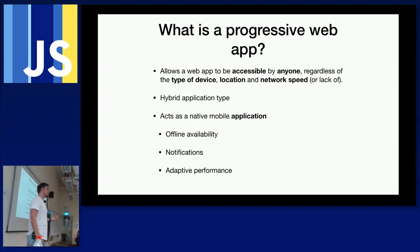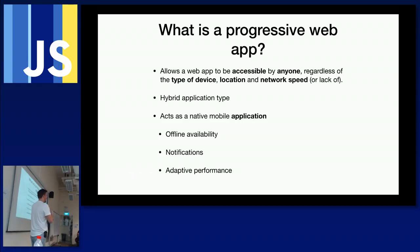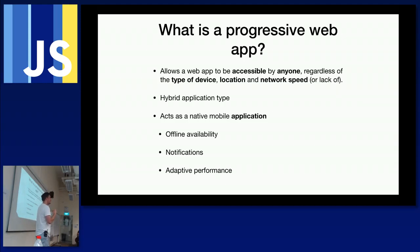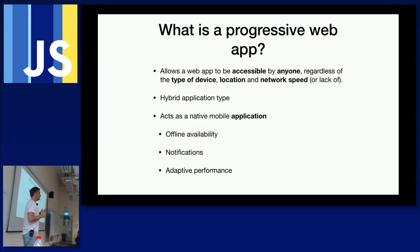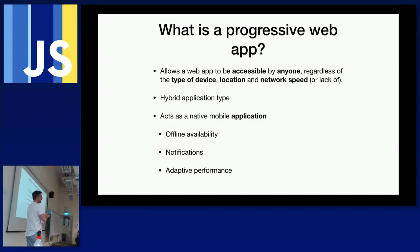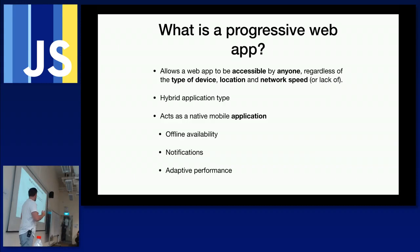Progressive web apps also enable adaptive performance. Remember this: a progressive application allows a web app or website to be accessible by anyone regardless of what device they use or where they are in the world — meaning what speed of network they use. The 'progressive' in PWA means giving users a progressive enhancement: on a 2G network you don't stream HD video, but on Wi-Fi you do. You might show a picture instead on slow connections.